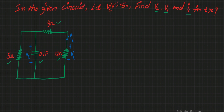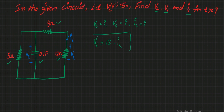From the circuit, we need to find the value of Vc, Vx, and Ix. Vx and Ix are related — if you know Ix, it is possible to find Vx, and vice versa. The relation is: Vx equals the voltage across the 12 ohm resistor, and the current flowing through the 12 ohms is Ix. So Vx = 12·Ix. If you know Ix, it is possible to find Vx.